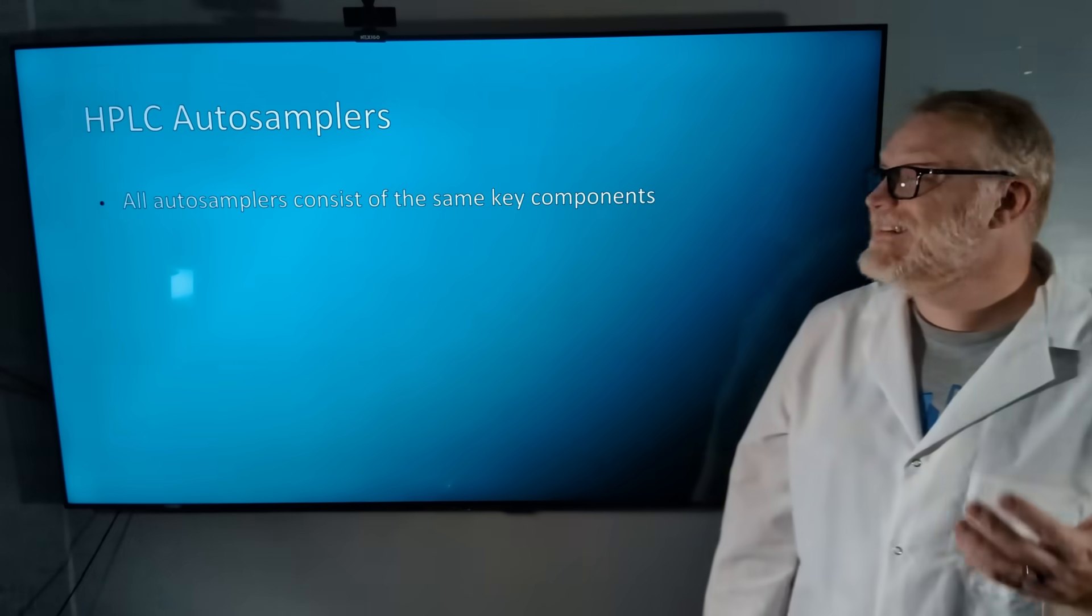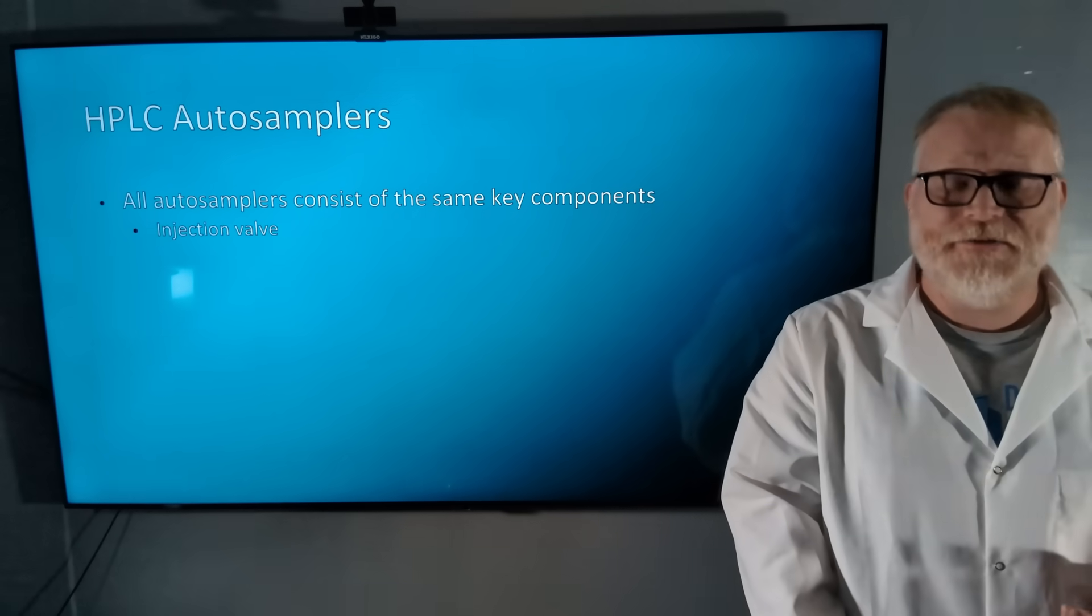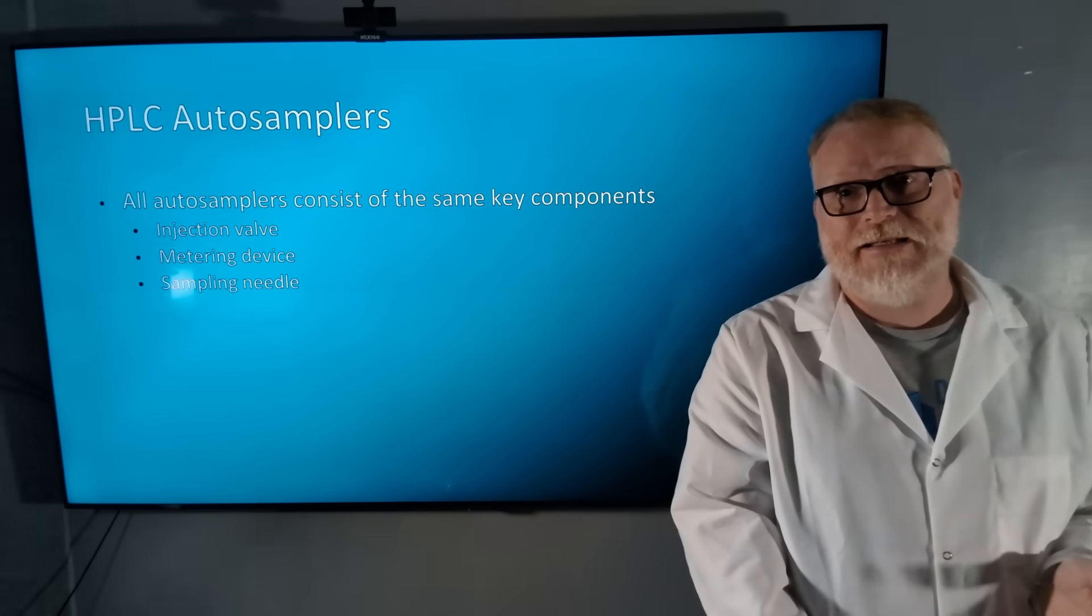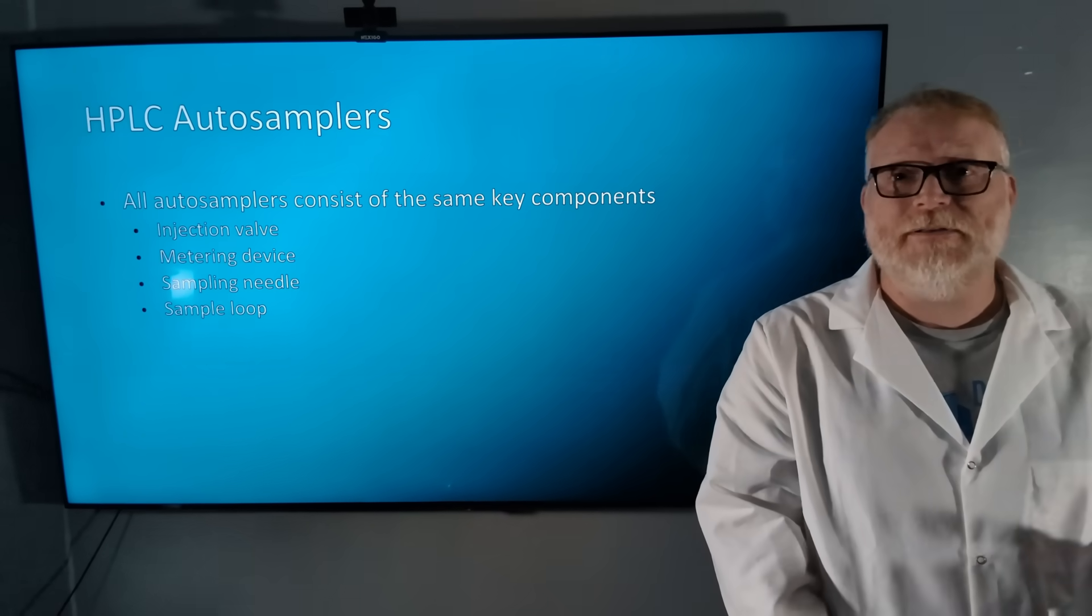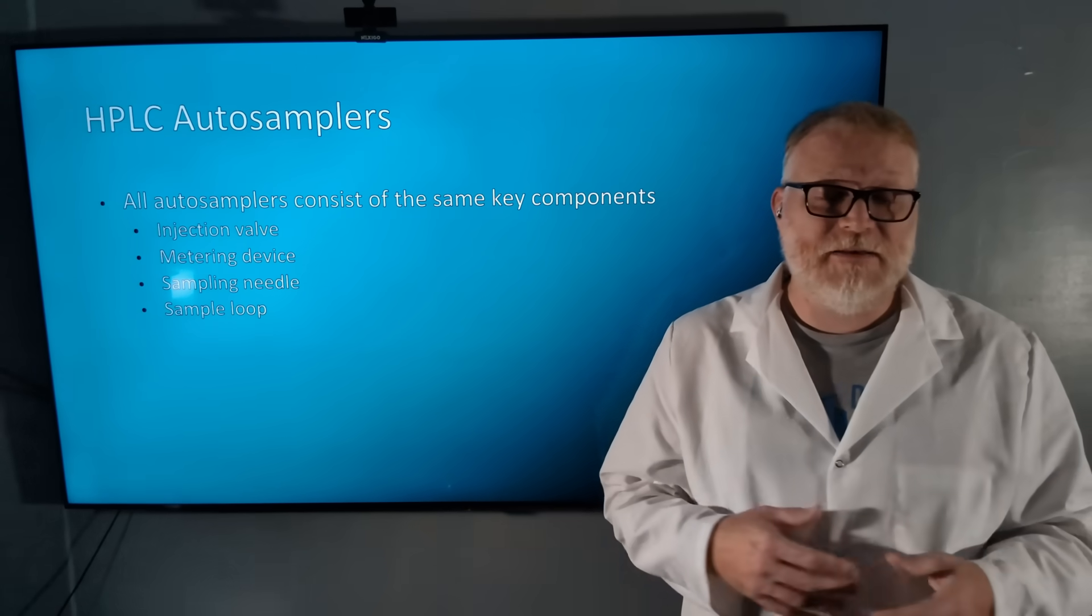All autosamplers consist of the same key components. They're made of an injection valve, a metering device, a sampling needle, and a sample loop. Sometimes that sample loop can be variable or it can be fixed.